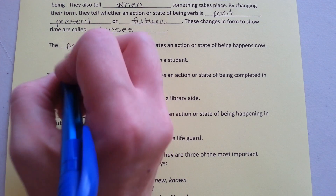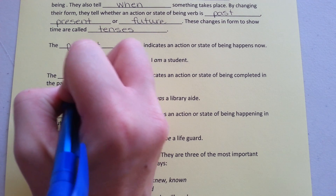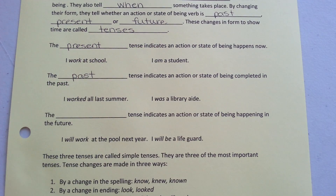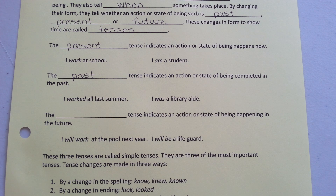The past tense indicates an action or state of being completed in the past. For example: I worked all summer. I was a library aide.